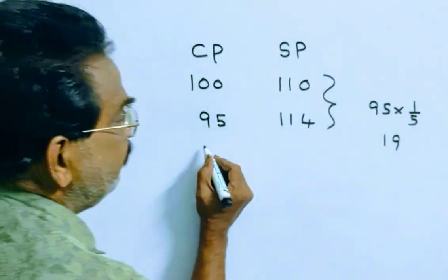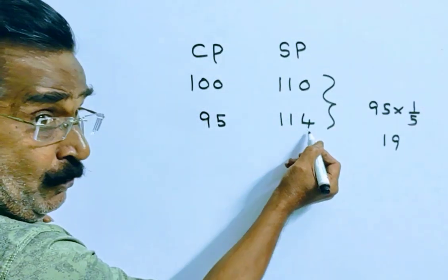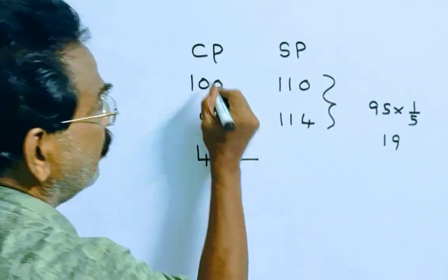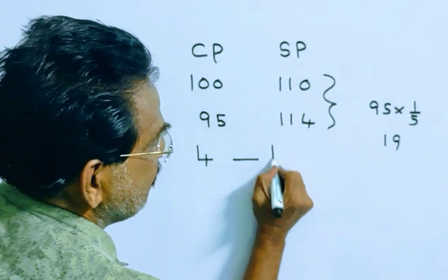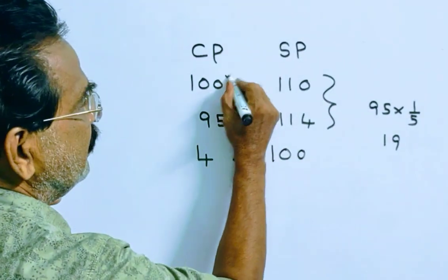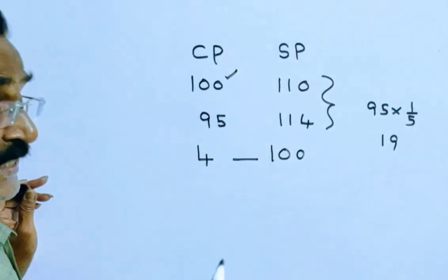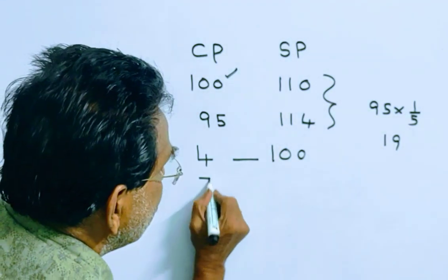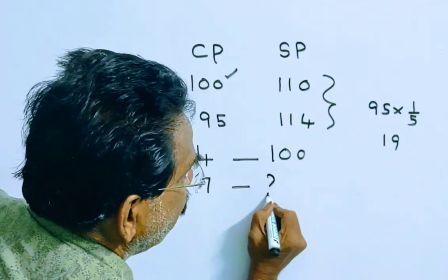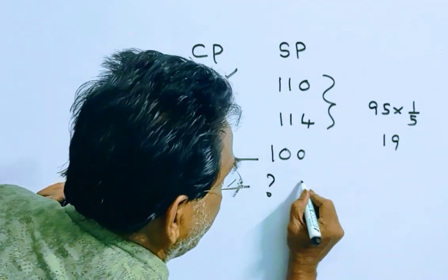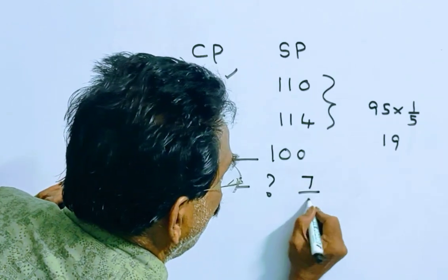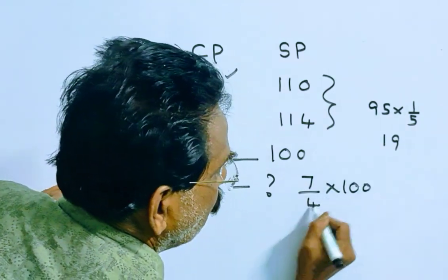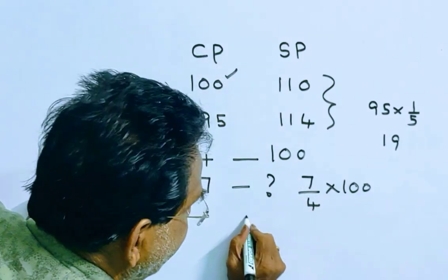Friends, if the selling price is Rs. 4 more when the cost price is 100, it is given that the selling price is Rs. 7 more. So using the ratio: 7 over 4 into 100 gives us 175.